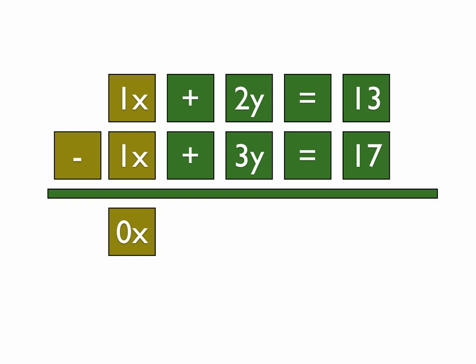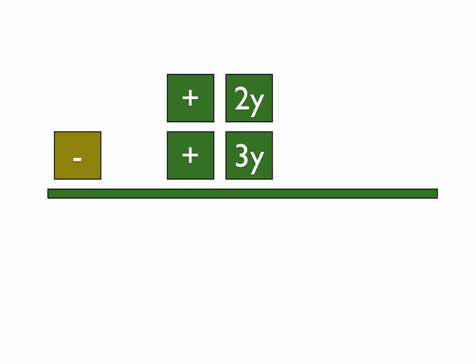And then the next one we have 2y minus 3y. It's a positive 2y and positive 3y, and we're subtracting, we're doing 2 minus 3. And when you do that, you're basically doing 2 minus 3, and you get a negative 1y.